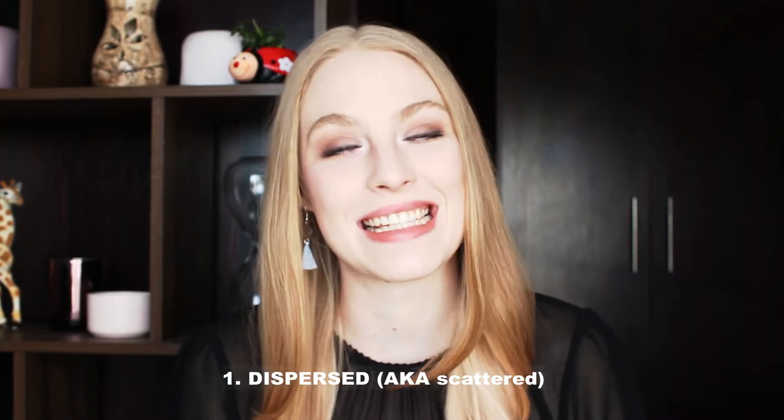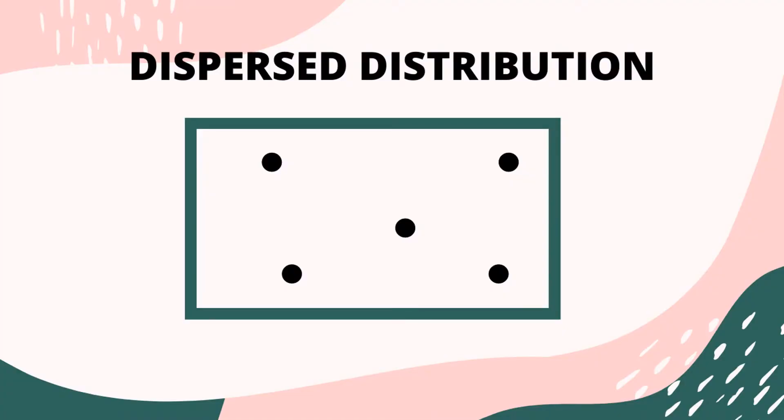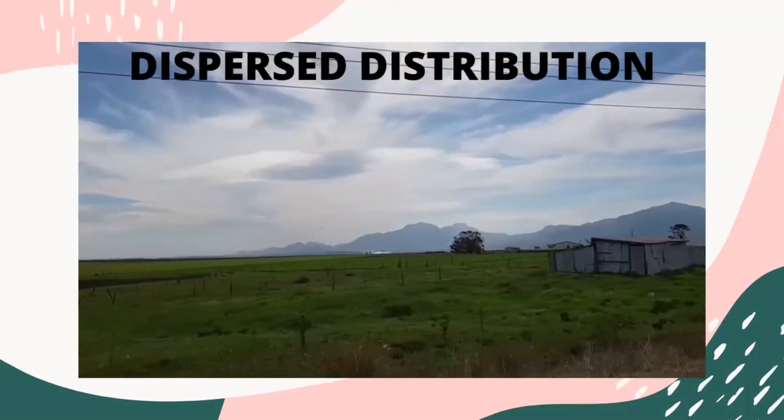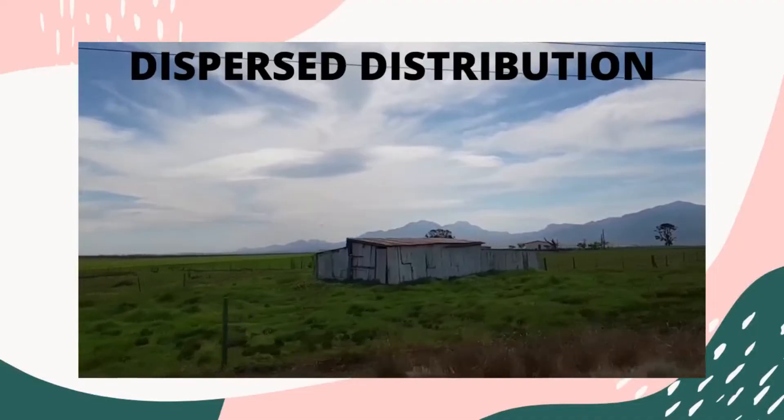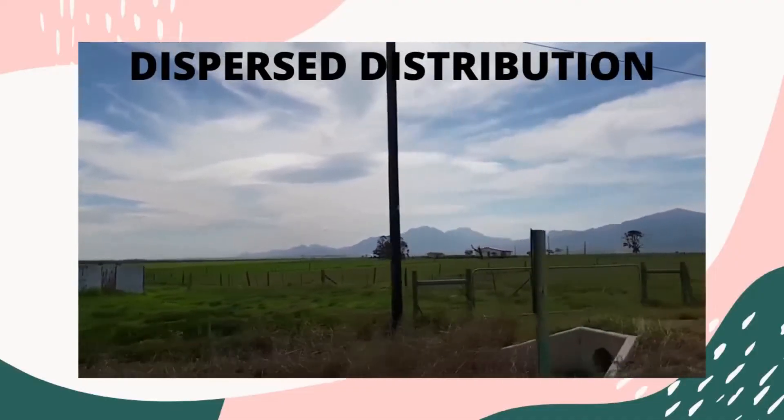Let's first have a look at the different types of population distribution that exist. The first type is dispersed, also known as scattered. Dispersed population distribution is when people live very far apart from each other. This is very common in rural areas, especially farmlands, where each farmer and his family will have their own house and their own plots of land, very far from all the other farmers.